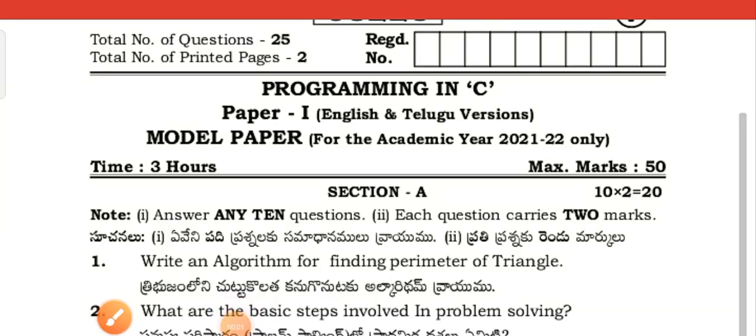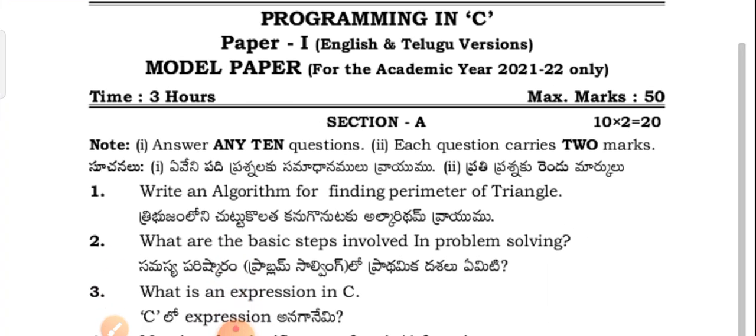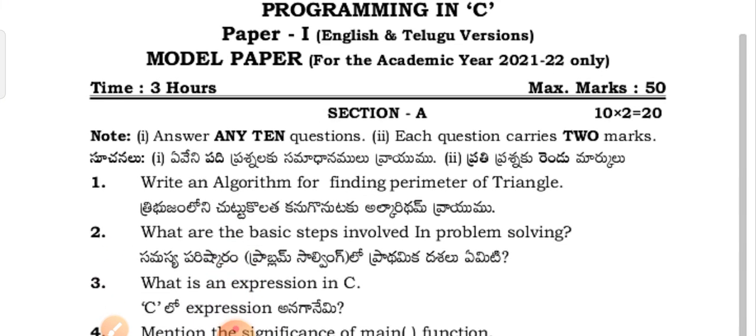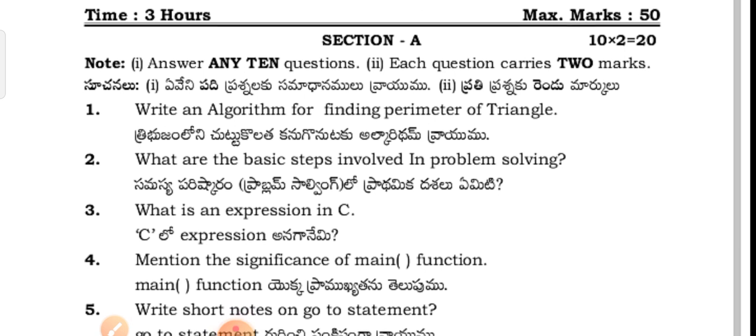Hi guys, very good evening to one and all. Welcome back to my channel. Today I would like to show the model question paper for computer science first years, Paper 2 — that is Programming in C. This question paper is prepared by the T.S. B.I.E., Board of Intermediate Education. AP students can also follow along.